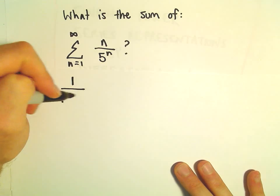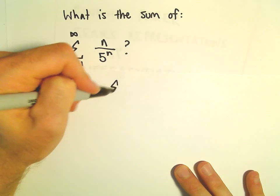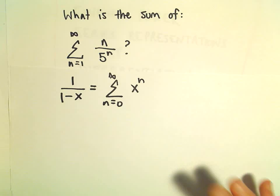One thing that's important is to use this power series representation for 1 over 1 minus x. And again, that's the series from n equals 0 to infinity of x to the n power.